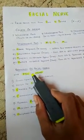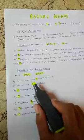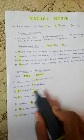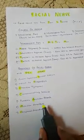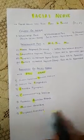And the branches can be remembered as PSC CAMP: petrosal nerves, stapedius, chorda tympani, communicating branch, auricular branch, muscular branch, and the peripheral branch. Thank you.